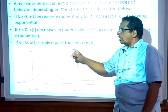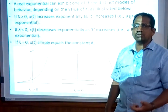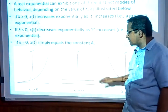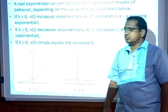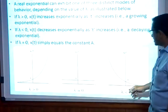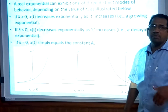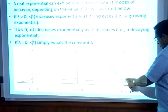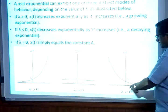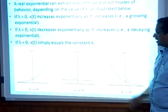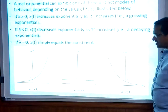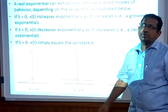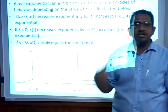If λ equals 0, then e to the power 0 equals 1, giving a constant signal of amplitude A — a uniform signal. If λ is less than 0, then e to the power of minus infinity equals 0, and as λ decreases you experience a decreasing exponential signal. All these are real exponential signals.